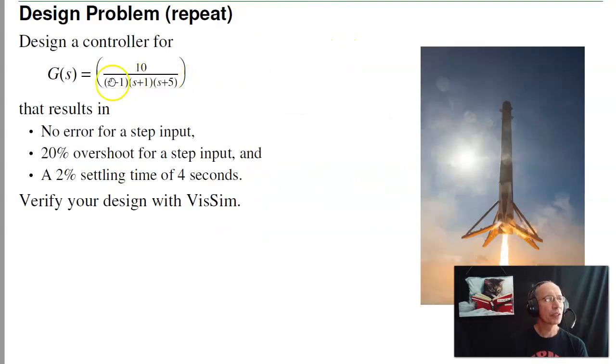As an example, suppose we take that same system we had before. I have an unstable pole, two stable poles. I want to come up with a feedback controller that gives no error for step input, 20% overshoot for step input, and a 2% settling time of 4 seconds. What I'll do is I'll do that in two steps.